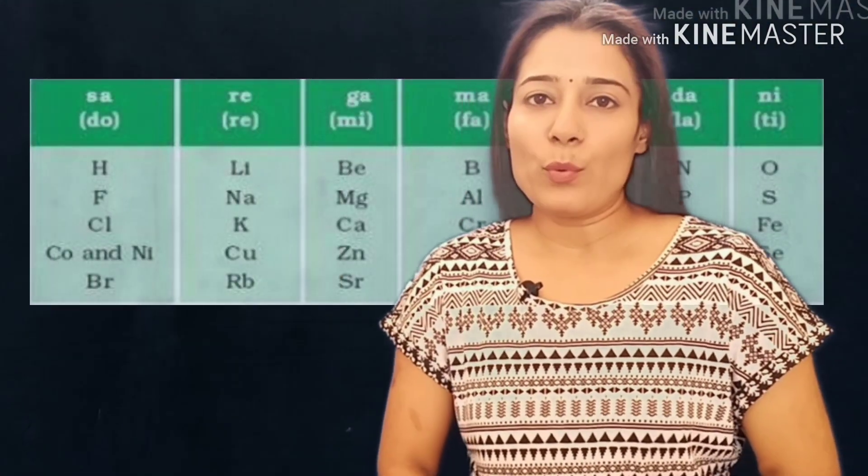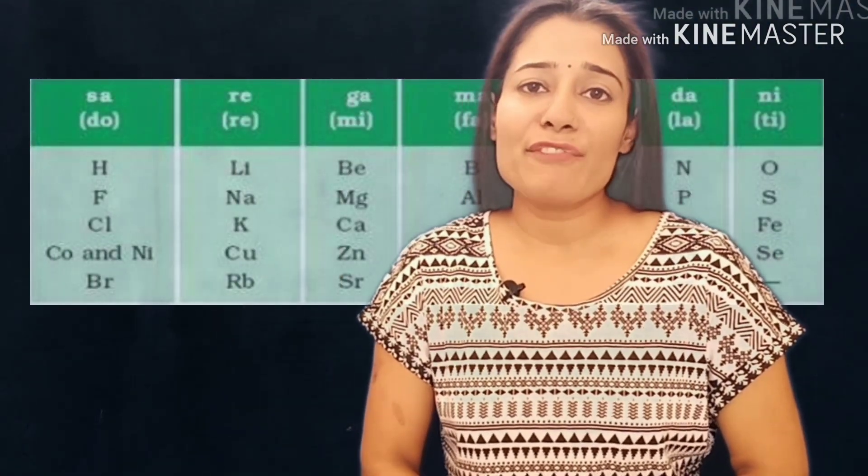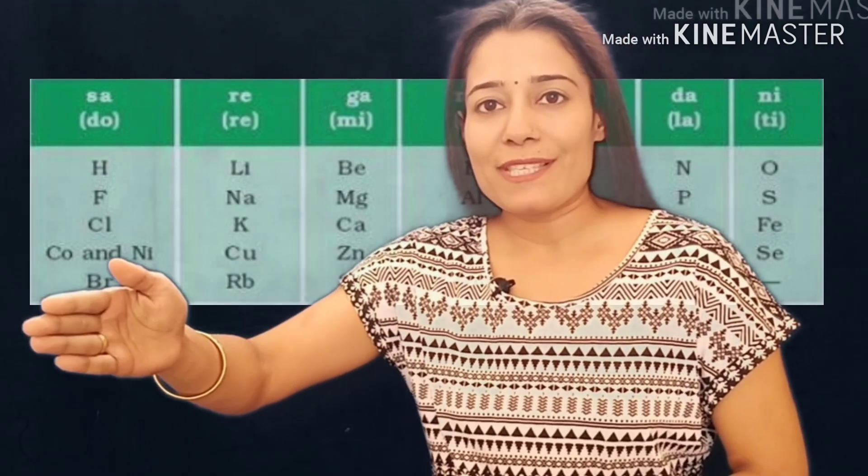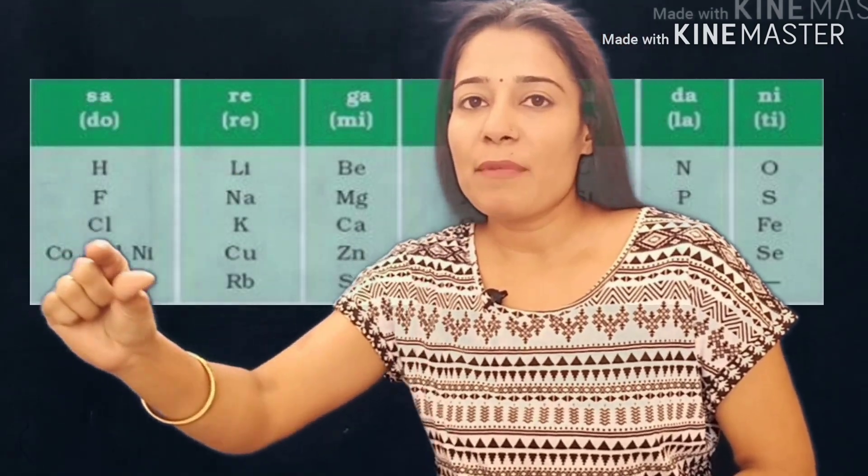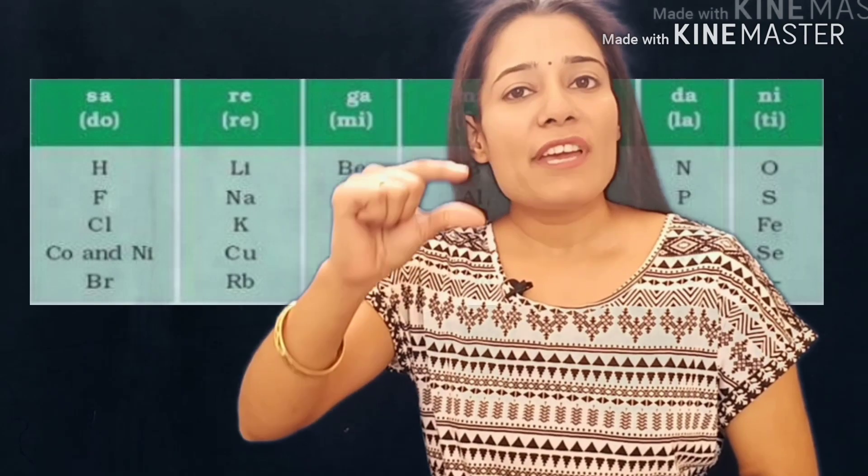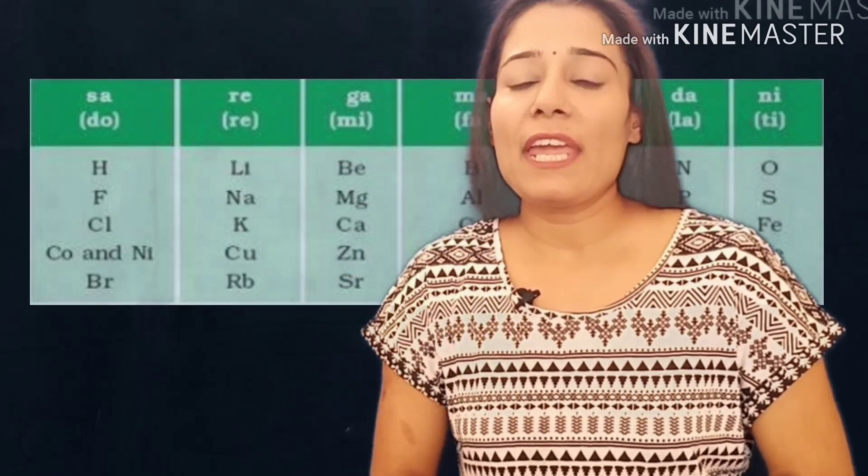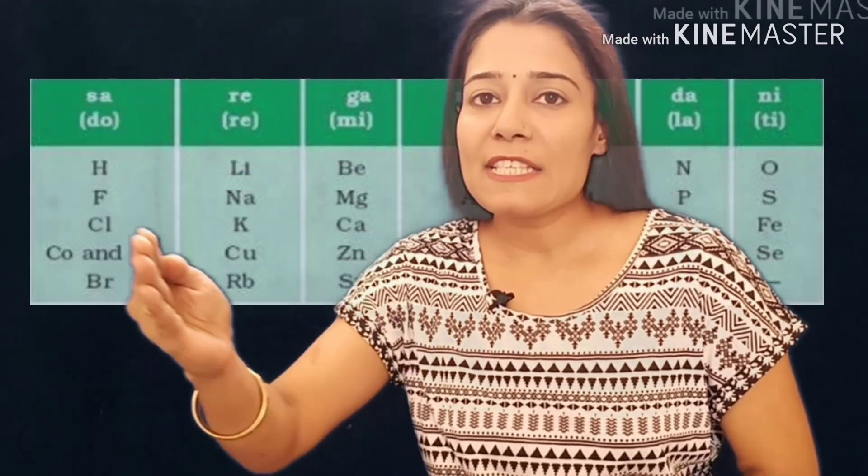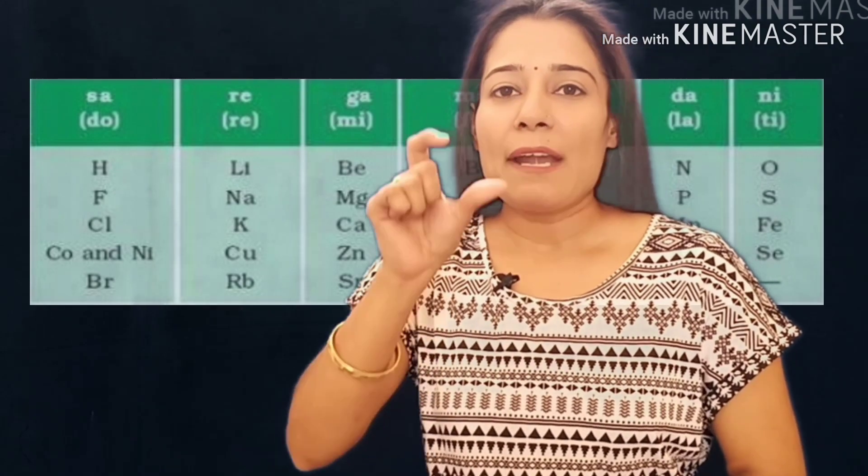Because all the other discovered elements could not get accommodated in Newlands' classification table. As you already know, Newlands divided his classification table in seven rows and every eighth element again starts by the very first row. By this way, every eighth element again gets placed in the same row and makes a group.